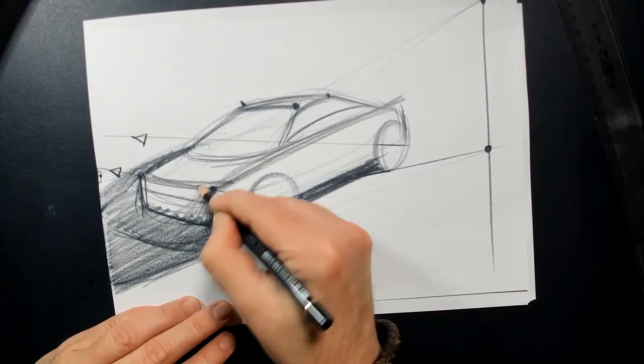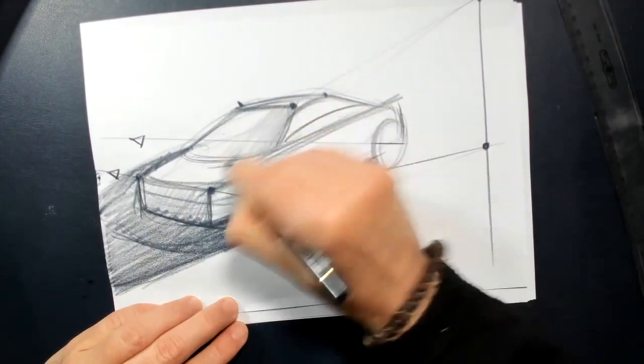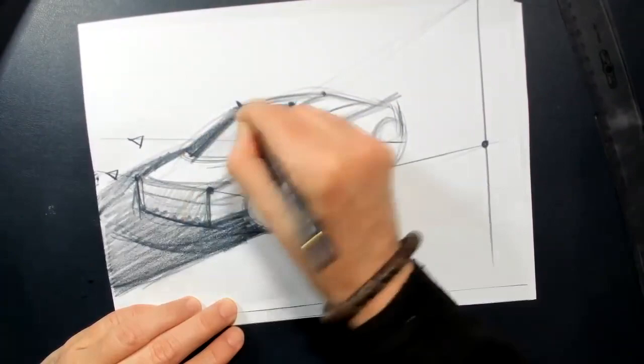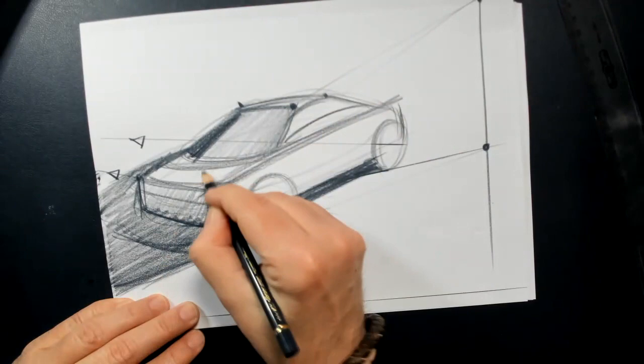And of course, this part will be a little bit in shadow like this one. Here we have the reflection on my glass, a little bit of shadow here.